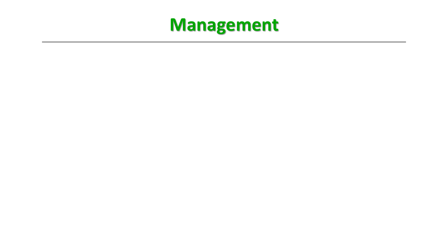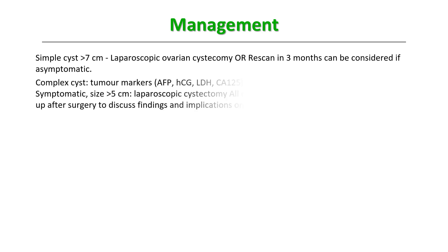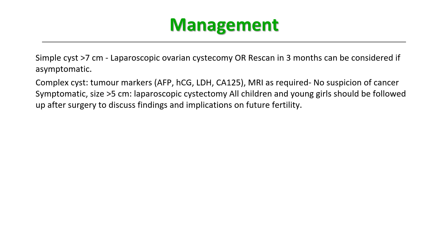For simple cysts more than 7 centimeters, consider laparoscopic ovarian cystectomy, or a further scan in 3 months if completely asymptomatic and the patient is willing for close follow-up. For complex cysts, tumor markers and MRI are required. When results show no suspicion of cancer, if the cyst is symptomatic and more than 5 centimeters, consider laparoscopic cystectomy. If there is a suspicion of cancer, refer to the gynecology and oncology multidisciplinary team. All children and young girls should be followed up after surgery to discuss findings and implications on future fertility.